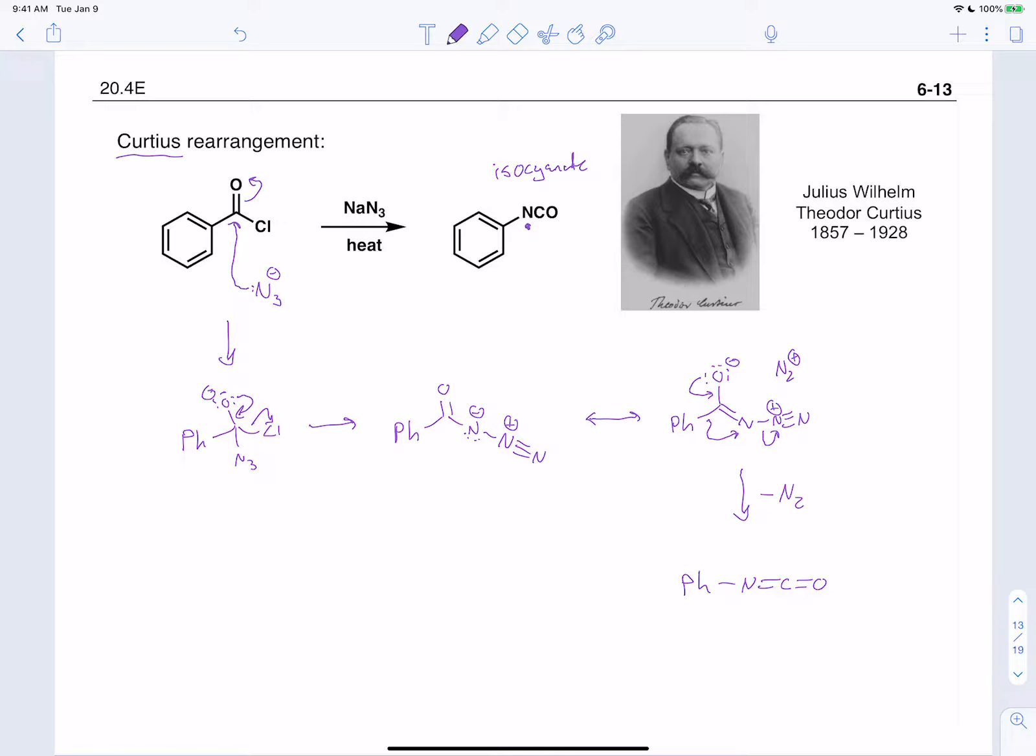So it's not that many steps to do the Curtius rearrangement, but there is a fairly tricky set of arrows to push. But I think if you remember, the nitrogen is a good leaving group, and we need to have the bond migrate to accompany it. I think this will help out.